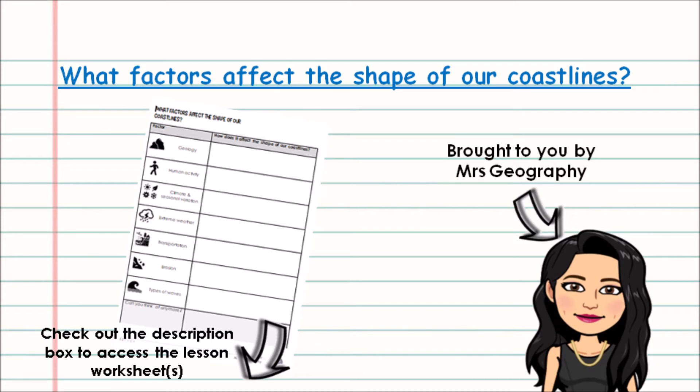There are multiple factors that affect the shape of our coastline and I'm not going to talk about every single one today, but I am going to give you an overview of eight factors in total. So we're going to start off thinking about geology.